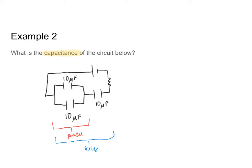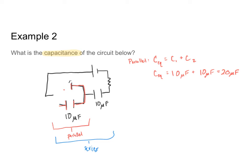Let's move on to solving this circuit. For our parallel component, the equivalent capacitance is just the sum of the individual capacitances of each capacitor. Therefore, for that parallel component, the equivalent capacitance is 10 microfarads plus another 10 microfarads, or 20 microfarads. That is going to be the equivalent capacitance for this first red component of my circuit.